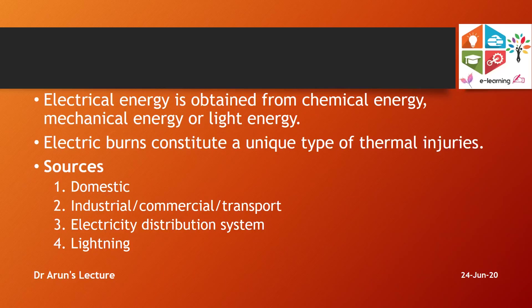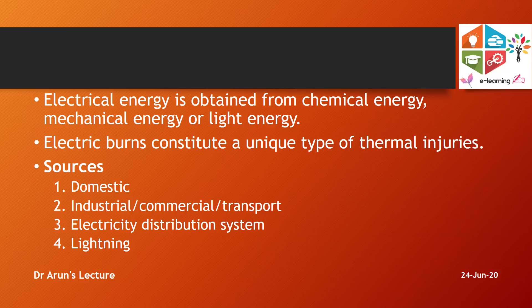Electrical injury can result in both non-fatal and fatal injuries. Electrical energy is obtained from chemical, mechanical, and light energy. When an individual is electrocuted, they sustain electrical burns and characteristic injuries over the body, mostly over the point of contact and point of exit, producing a unique type of thermal injury. Sources of electrocution include domestic supply, industrial accidents, commercial transport appliances with faults, electricity distribution systems, and lightning.